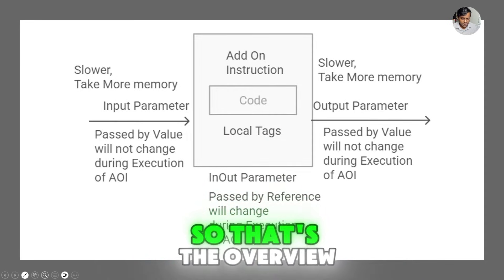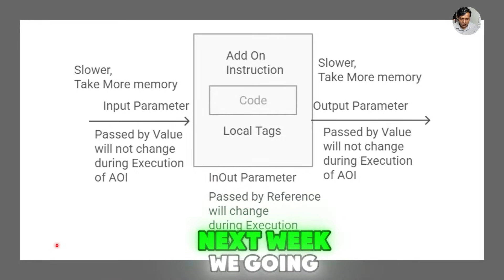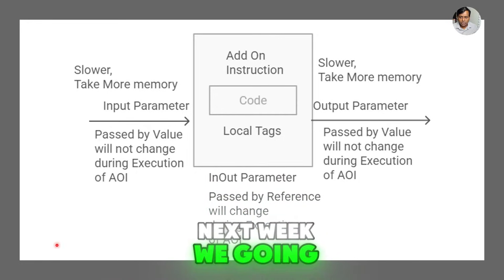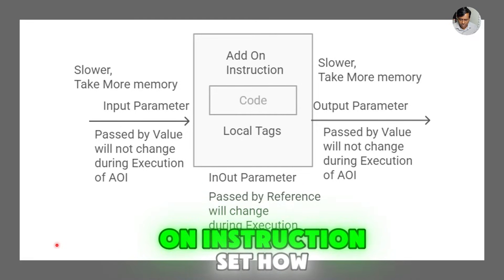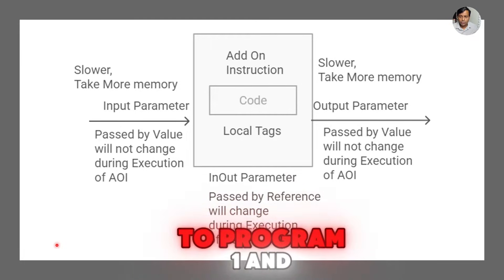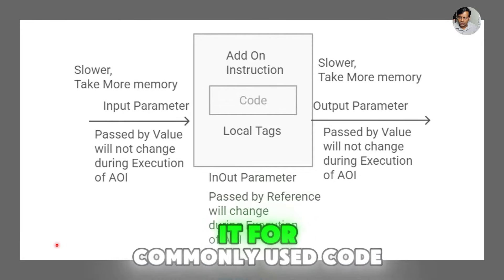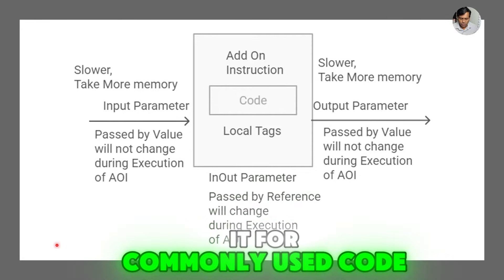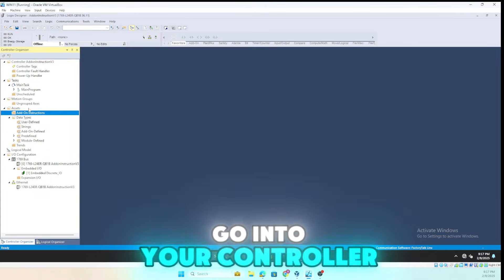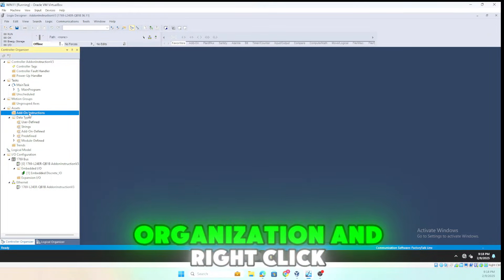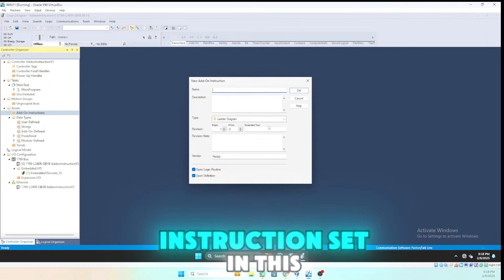That's the overview of add-on instruction sets. In this next section we're going to talk about how to use one, how to program one, and how to use it for commonly used code. To create an add-on instruction set, go into your controller organization, right-click, and click New Add-On Instruction.